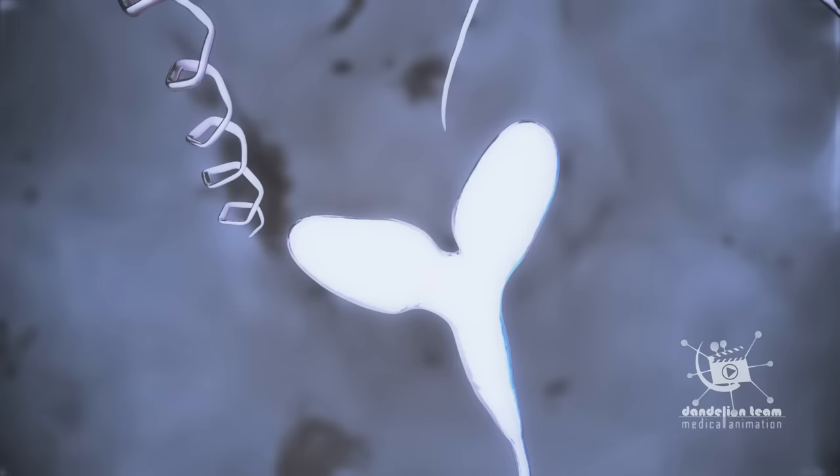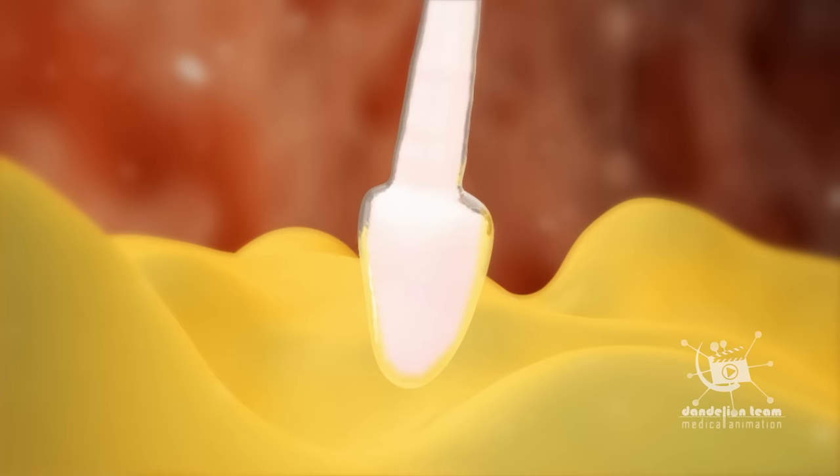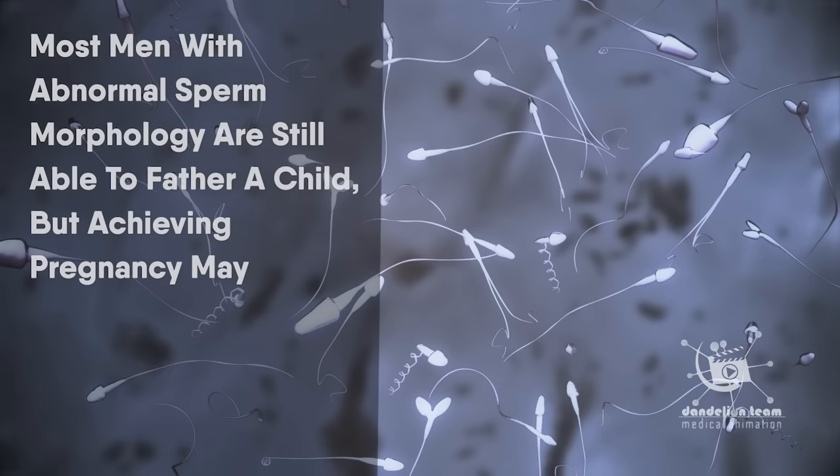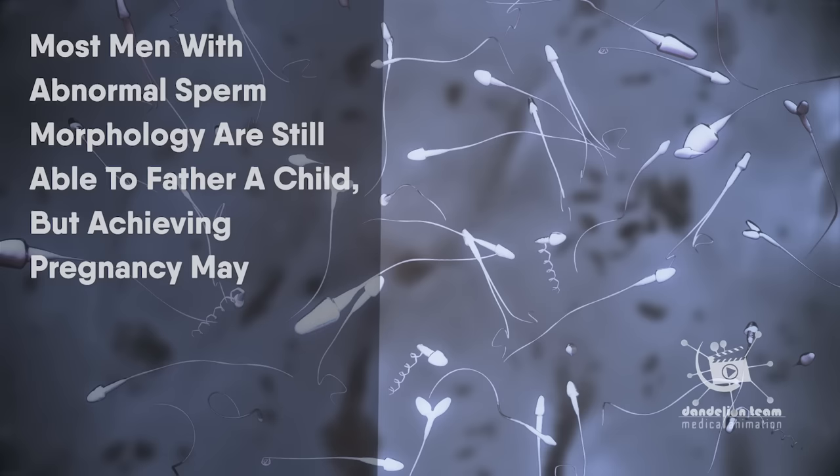Morphology can affect fertility directly because sperm need a certain shape to travel to the egg and to be able to penetrate the outer layers of the egg. Most men with abnormal sperm morphology are still able to father a child, but achieving pregnancy may take longer or require assistance from a fertility specialist.